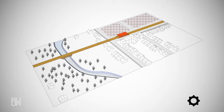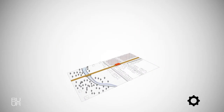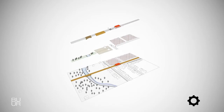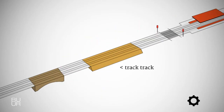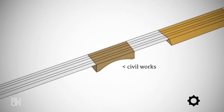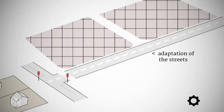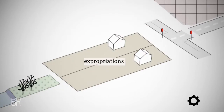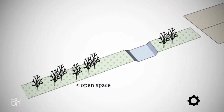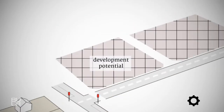To address the design phase, TramTrackTracer brings together eight complementary GIS blocks: the tram track foundations, the tram stop, civil works, the crossing, the adaptation of the street, expropriations, transitions through open space, and land with development potential.